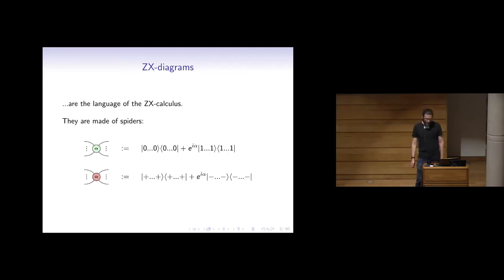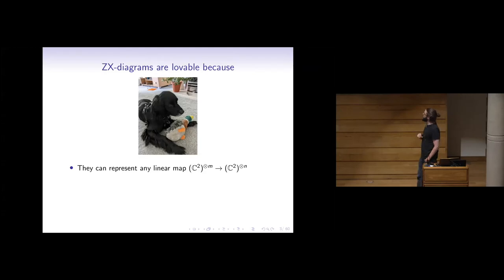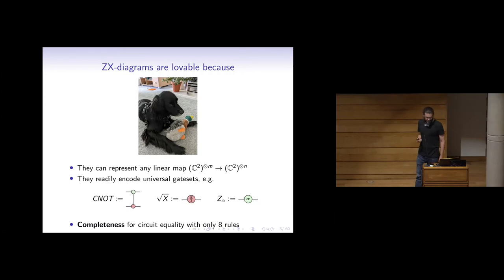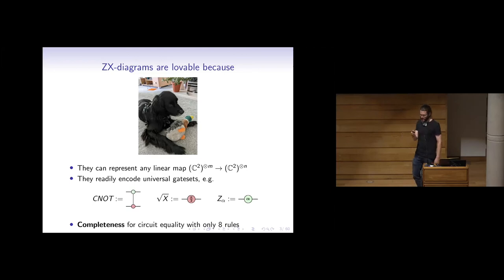What makes phase-free diagrams phase-free is that we assume those angles are always zero. We love ZX diagrams because they can represent any linear map — they're universal. If I allow the angles to be arbitrary, I can represent any linear map, including things that are not unitary. They readily encode universal sets of gates. Here's basically the Clifford plus phase gate set represented as spiders. And the calculus is complete: with only eight rules, if two diagrams describe the same linear map, I can translate one to the other using just those eight rules. It's a very powerful equational system.